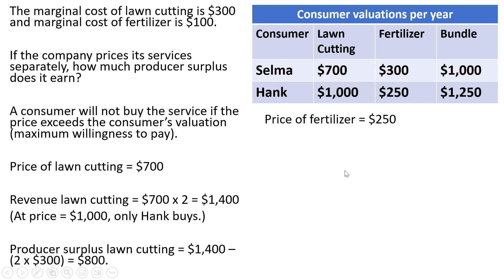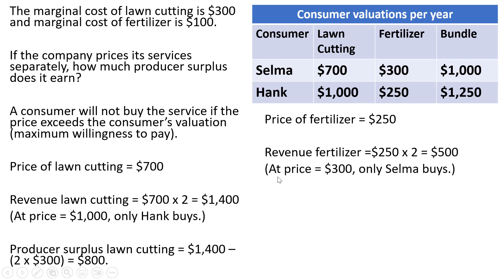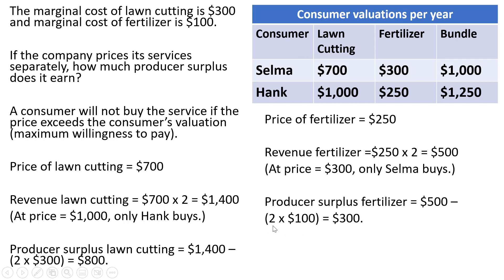Now let's look at the other good. The ideal price for fertilizer, if we're pricing separately, is $250. The revenue from fertilizer will be $500 — Selma and Hank are both willing to pay $250 each. If the company tried to charge $300, only Selma would buy fertilizer and revenue would be less — only $300 instead of $500. The producer surplus from fertilizer is going to be the revenue minus the marginal cost of applying the fertilizer. Since we have two consumers, it's 2 times $100, so we subtract out $200, and we get producer surplus of $300.